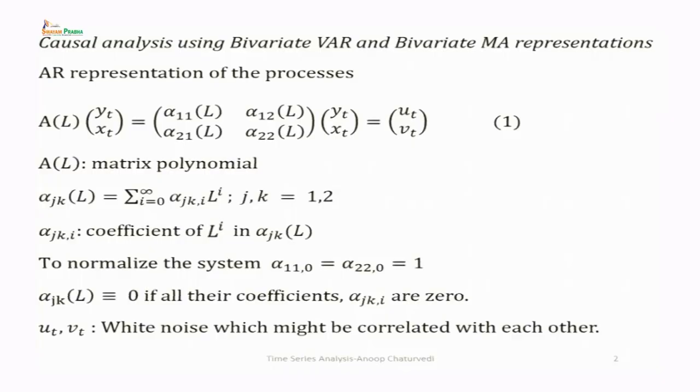First, we will consider different causality tests for bivariate time series models. Then we will also discuss causality tests for more than two time series processes. Now, we consider causal analysis using bivariate VAR and bivariate MA representations.